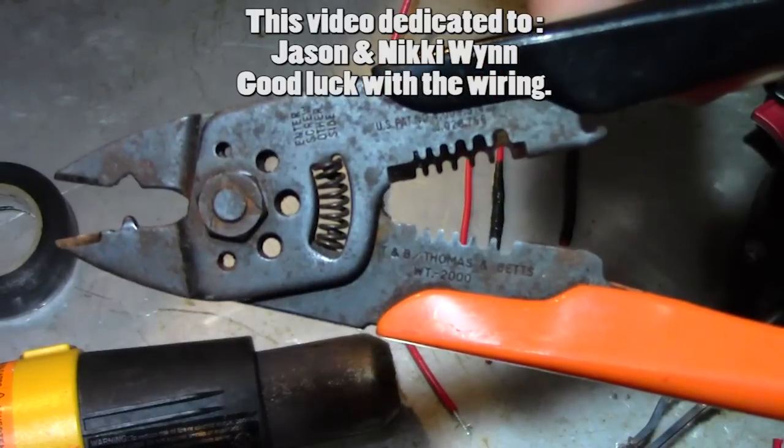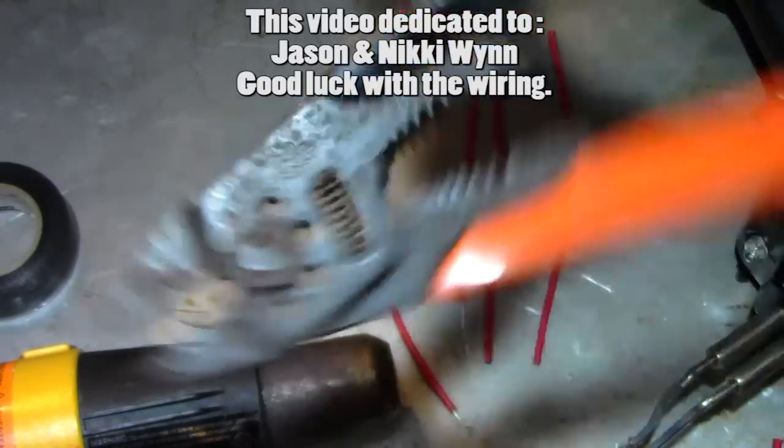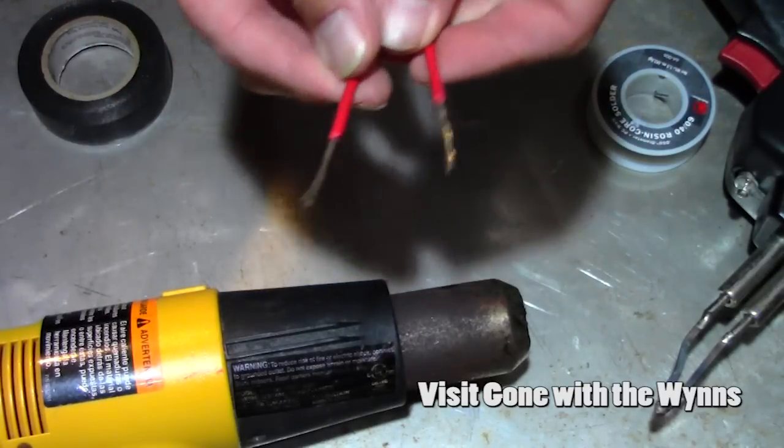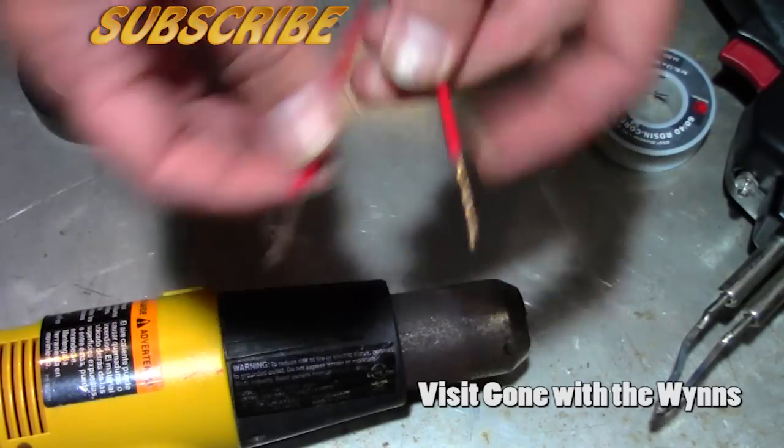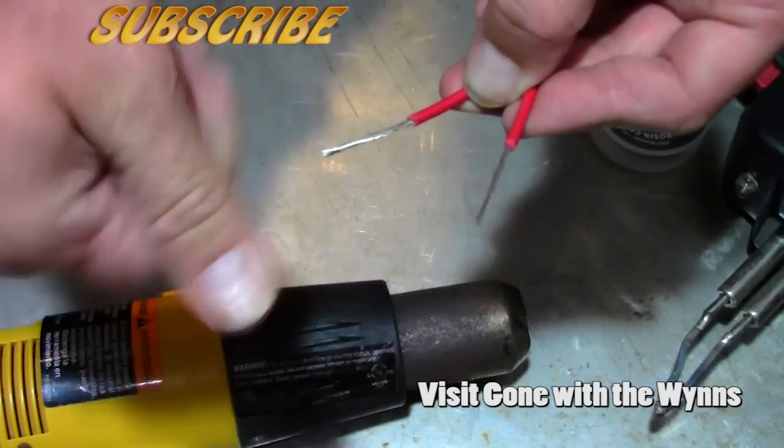Using a decent pair of strippers or crimpers, strip your wire about an inch on each wire. Once they're stripped, twist each wire individually.